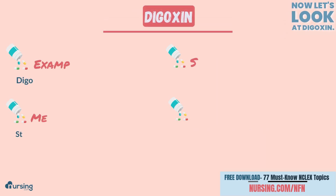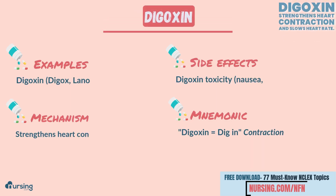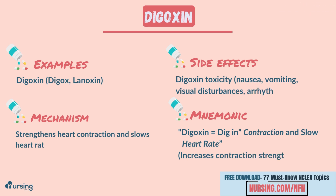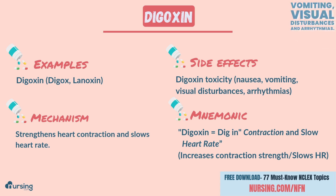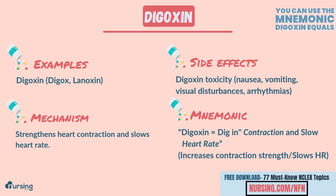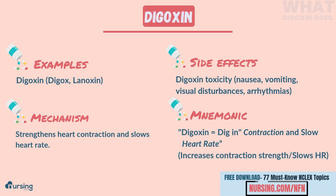Now let's look at digoxin. Digoxin strengthens heart contraction and slows heart rate. Side effects include digoxin toxicity, which can cause nausea, vomiting, visual disturbances, and arrhythmias. You can use the mnemonic 'digoxin equals dig in contractions and slow heart rate' to remember what digoxin does.